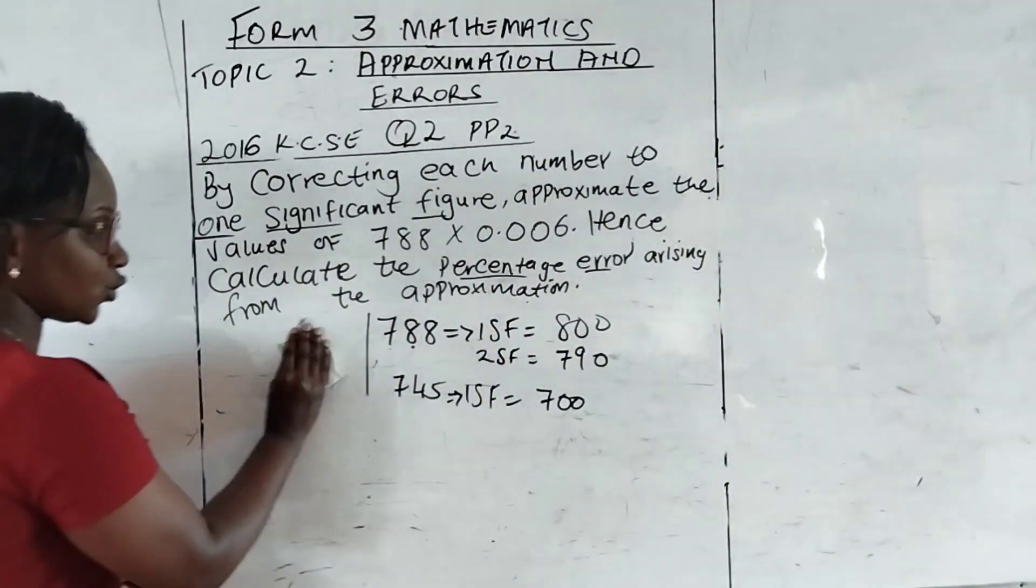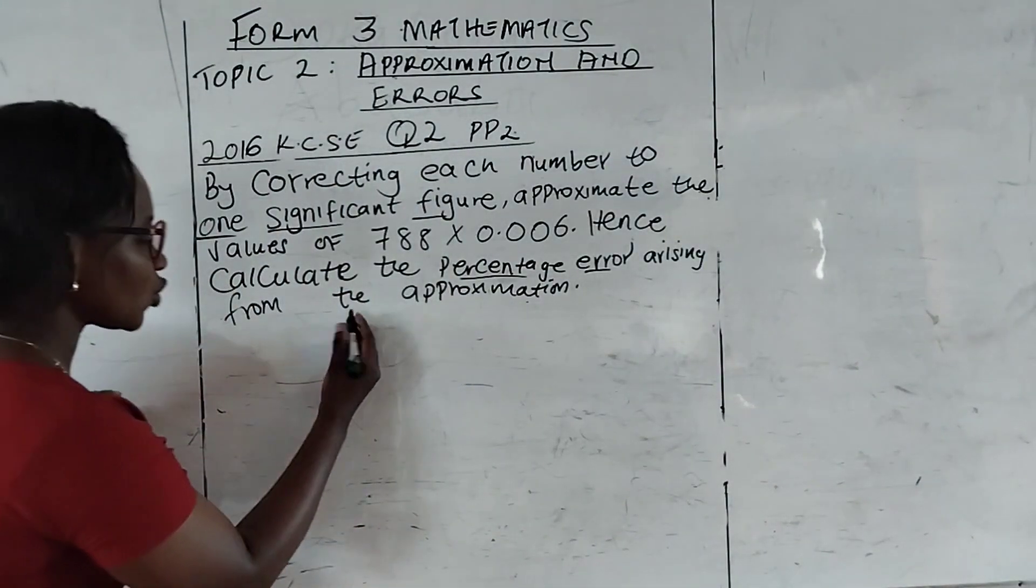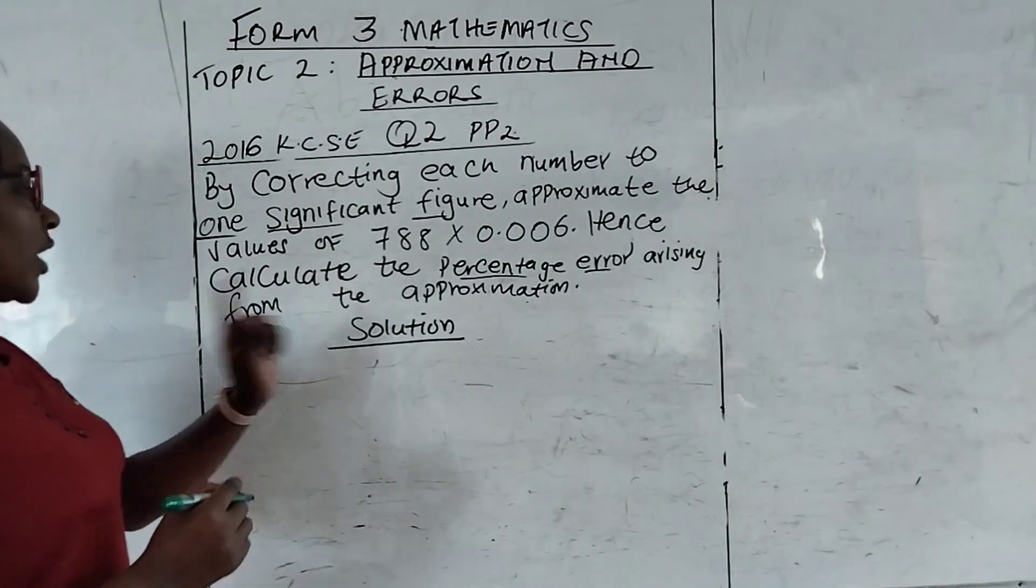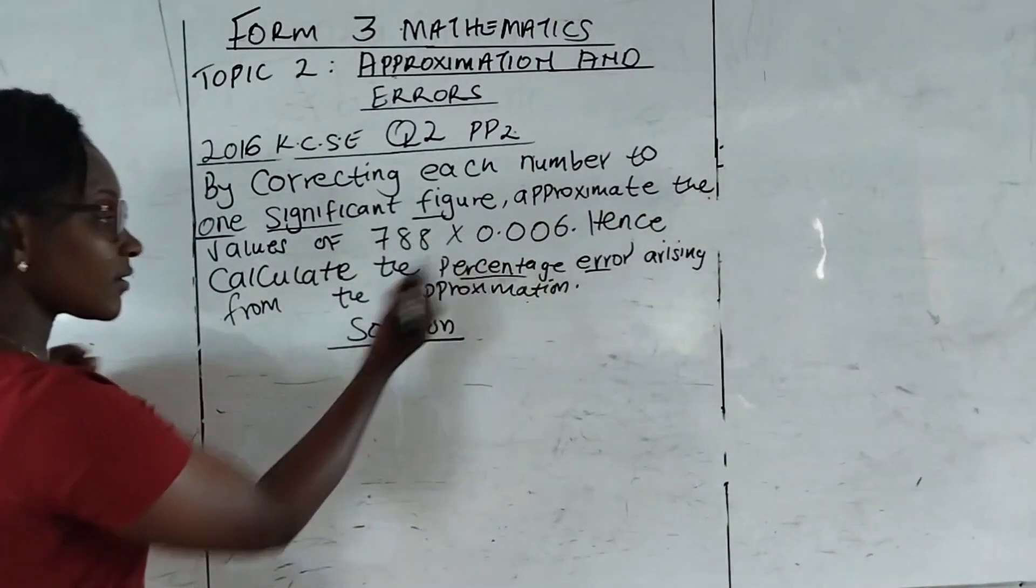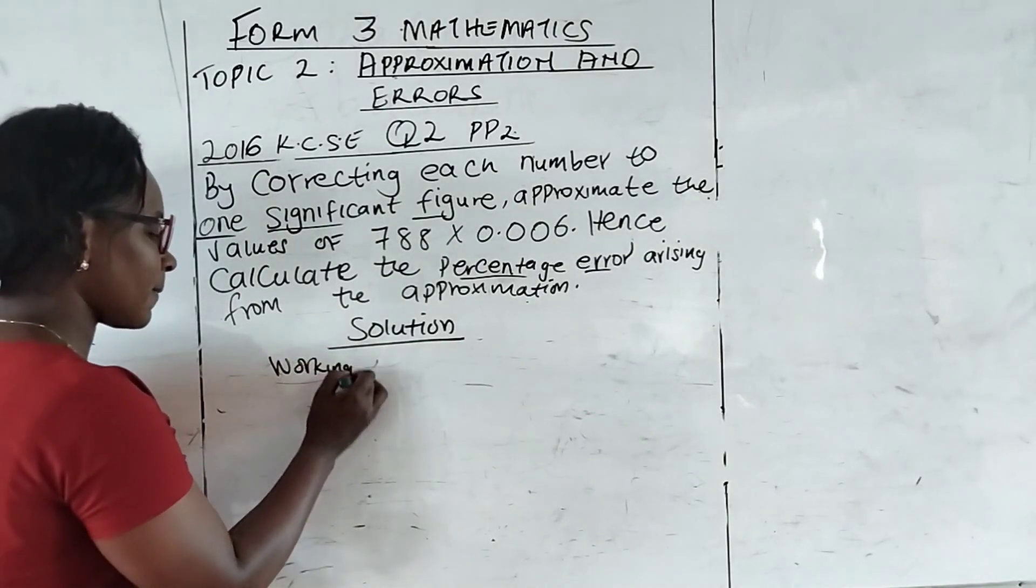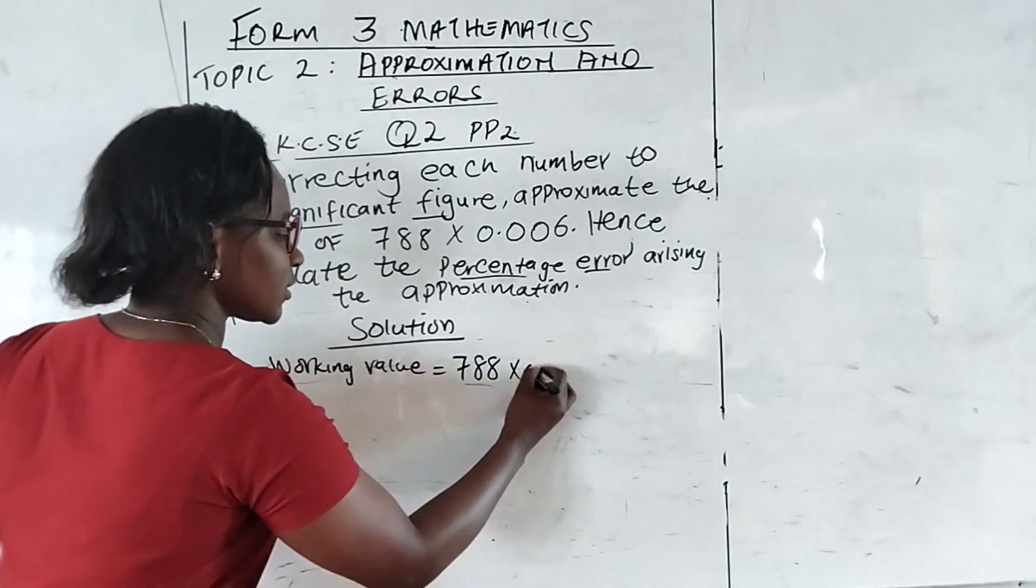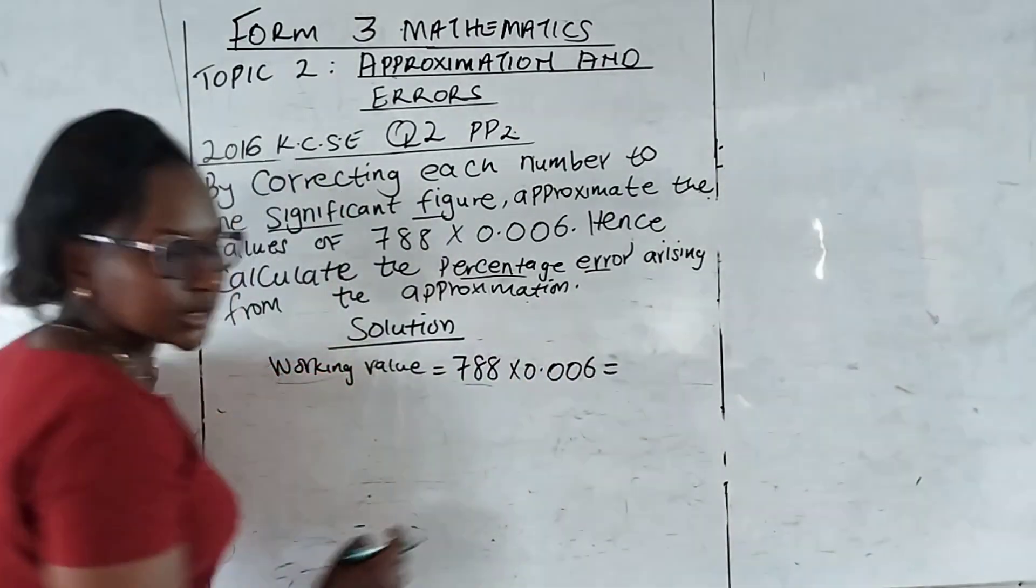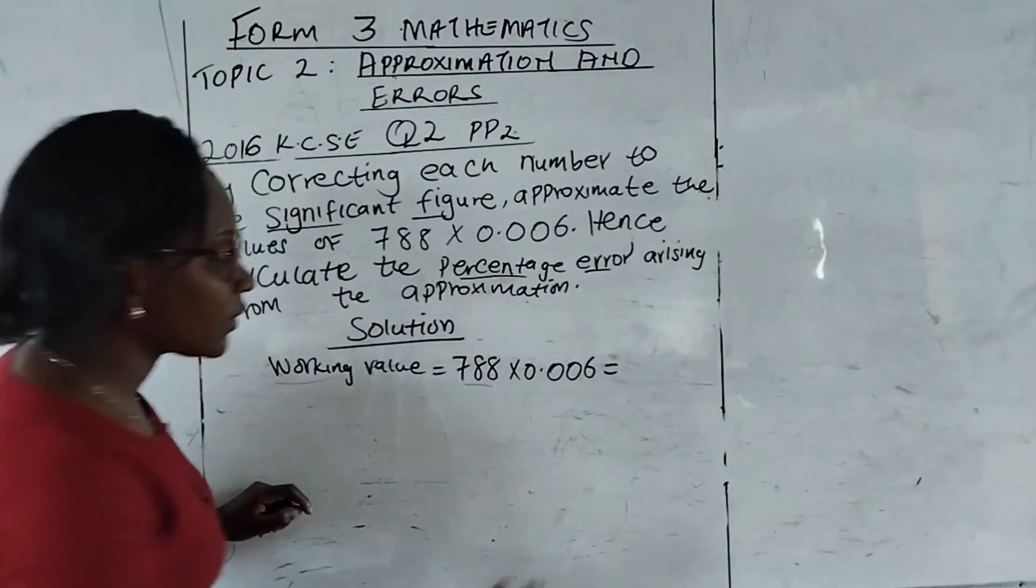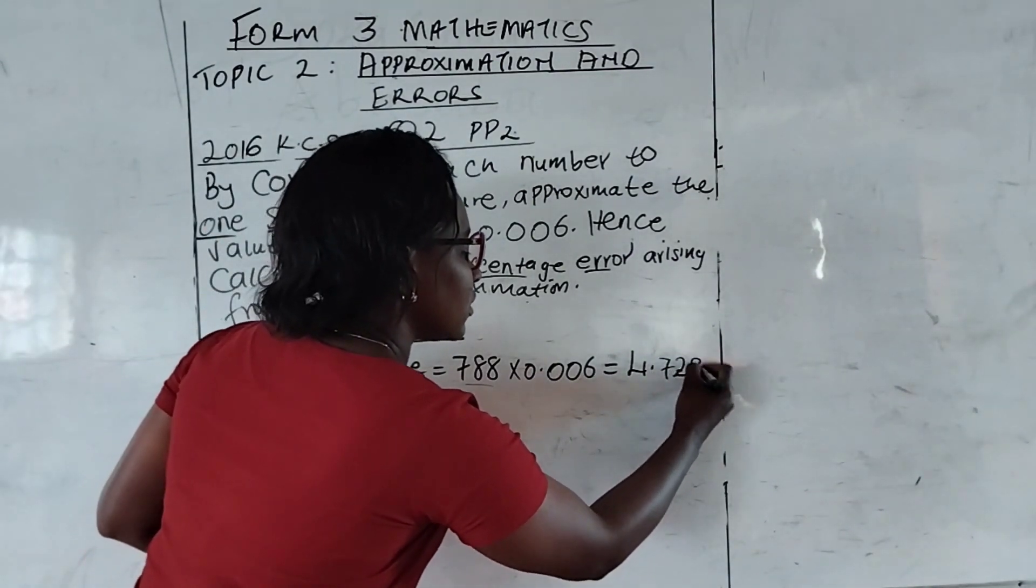Let's go to our question. Let's try and solve and see what we have. We have the working value is 788 multiplied by 0.006. Let's try and see that our answer is going to be 4.728.